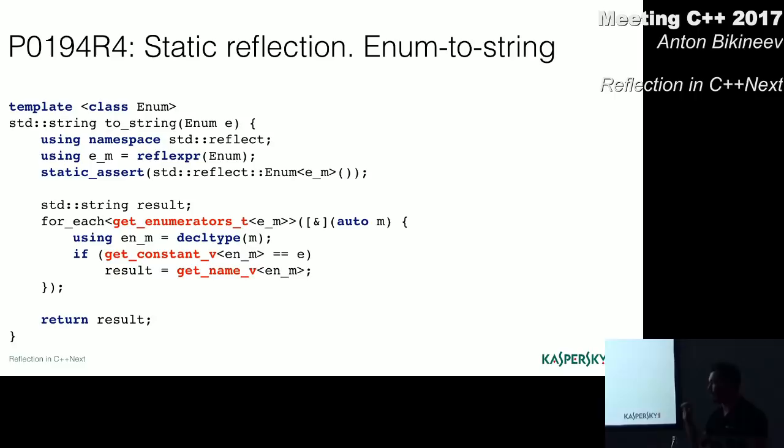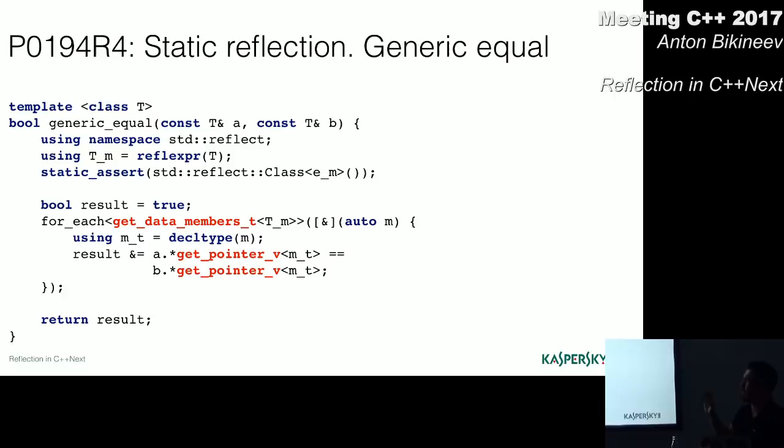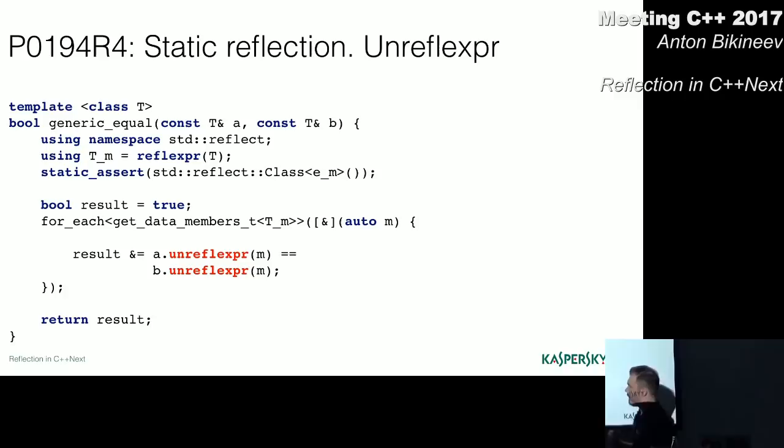And now we can do reverse transformation using the meta function get reflected type. So here are the concepts defined by the proposal. And there are a lot of them, not even counting the companion proposal for function reflection. The first one on the top called meta object is the most important one as it satisfies all meta object types.